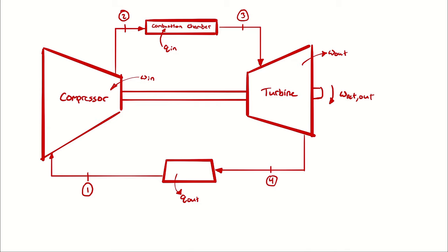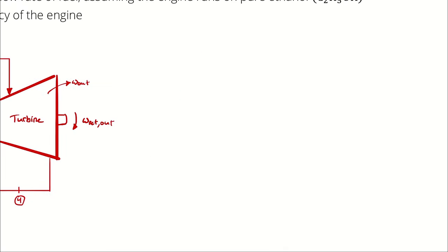I have isentropic compression from state 1 to 2, because I wasn't told the compressor and turbine were operating at anything other than 100% isentropic efficiency. Then I have a combustion chamber from 2 to 3 that operates isobarically. Again, isentropic expansion from 3 to 4. And then the process from 4 to 1 completes the cycle — it is an isobaric heat rejection process, the Q-out box.